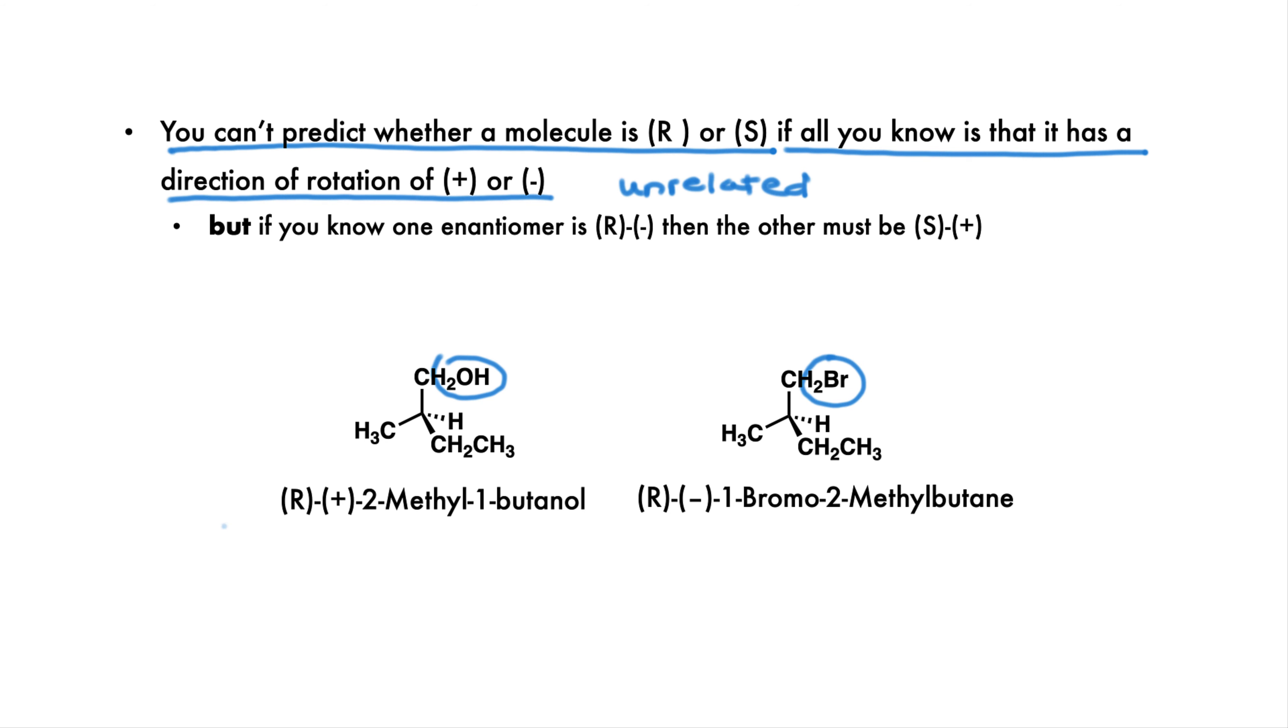There are both R, but the first has a positive rotation and the second has a negative rotation. But if you definitely know that one enantiomer is the R minus enantiomer, then you know the other must be the S plus enantiomer. Enantiomers must have both opposite R, S designations and opposite direction of optical rotations.